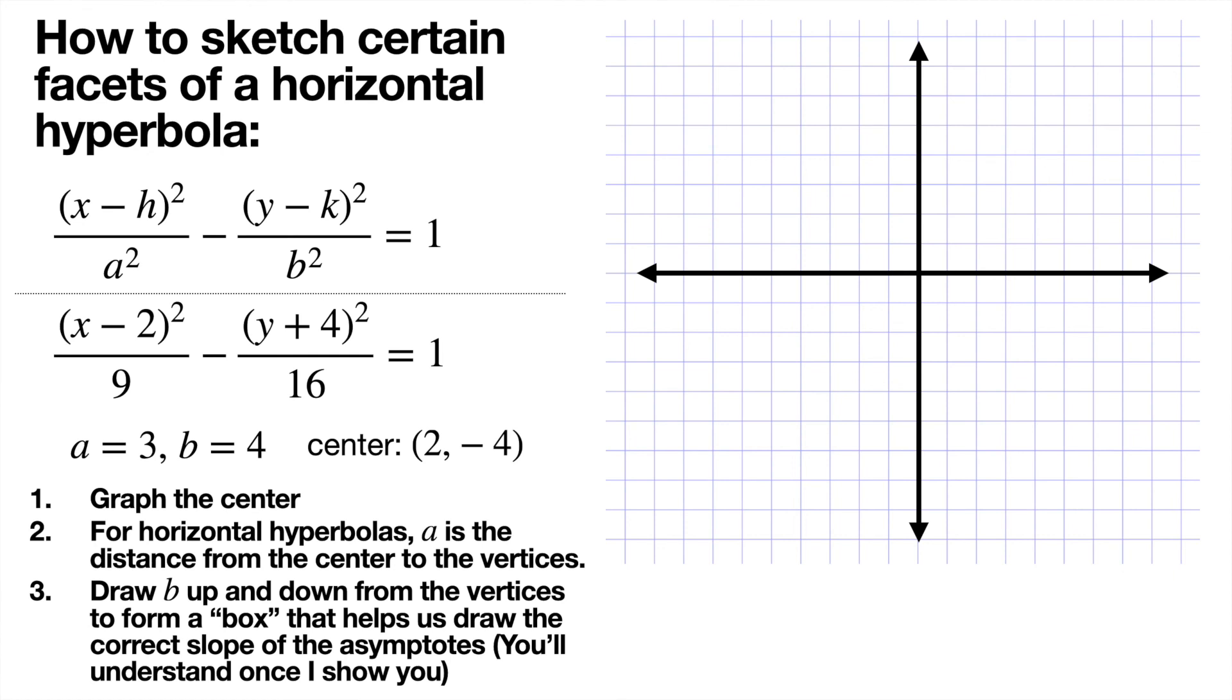And that allows us to figure out how to graph these things. So how do we sketch certain facets of a horizontal hyperbola? So I am going to teach you basically a simple way to graph essential features of the hyperbola. This won't be the most exact graph in the world, but this will give you a sense of how it works.